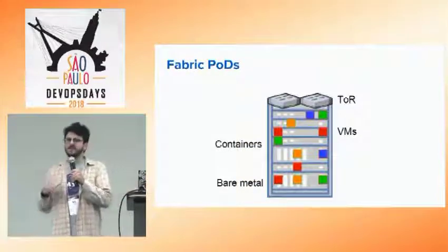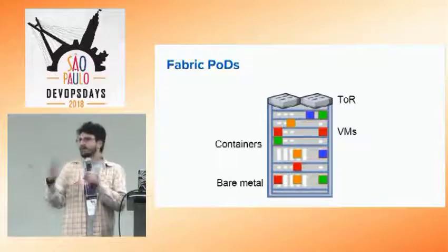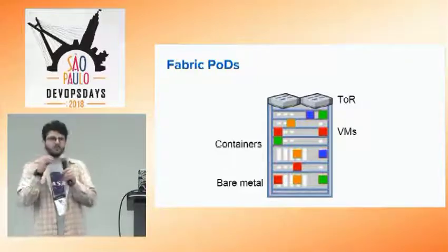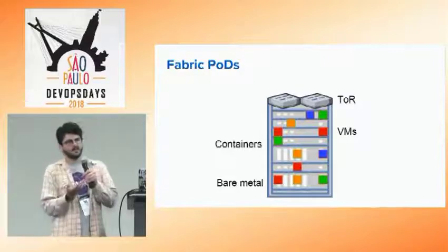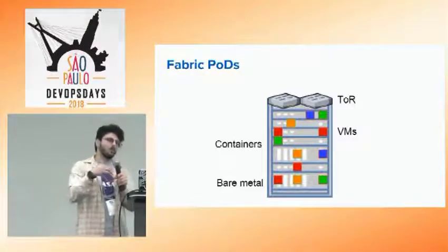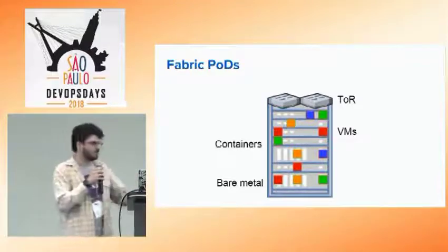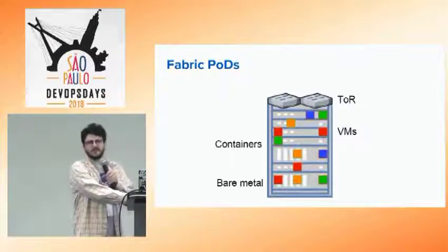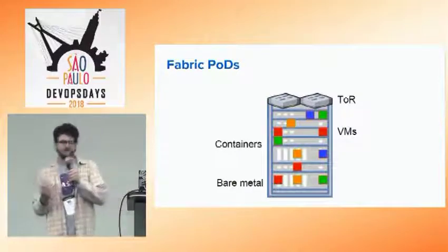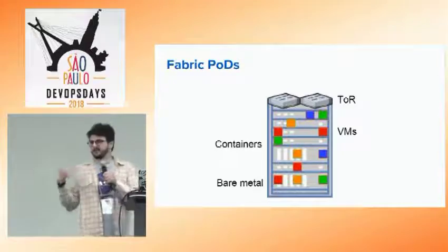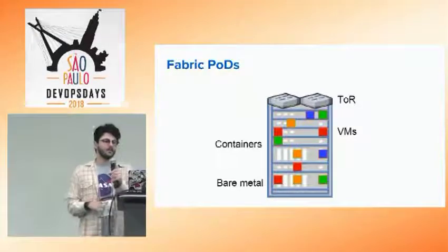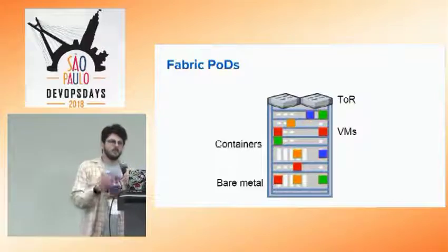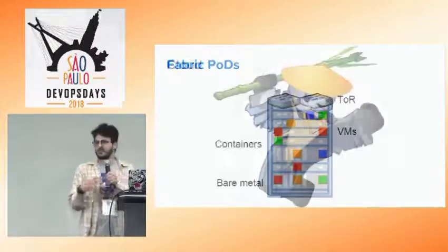Vamos entrar na estrutura mais básica do datacenter, que é o pod — não é o pod de Kubernetes, é o pod de redes, o point of delivery. Dentro de um ponto de entrega, é como se fosse um mini datacenter completo. Por quê? Porque eu tenho o L2 ali, a rede linkando nesses dois switches topo de rack — que a gente chama de stores — e as máquinas físicas estão ligadas a esses stores. As aplicações podem estar rodando diretamente na máquina, em VMs, ou em containers. Para distribuir essas aplicações dentro dos pods, nessa topologia Fat Tree usando Spine-Leaf, como a gente roda a nossa cloud privada?